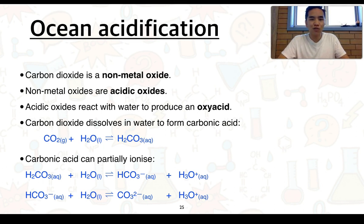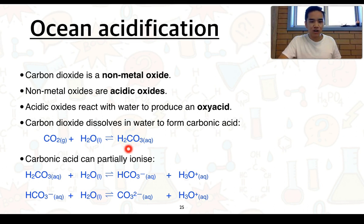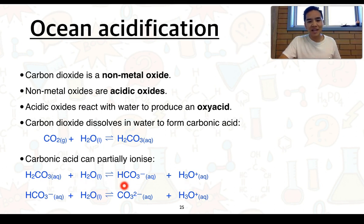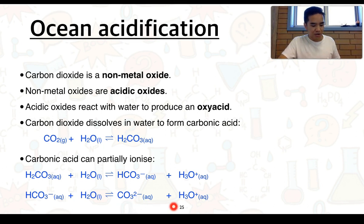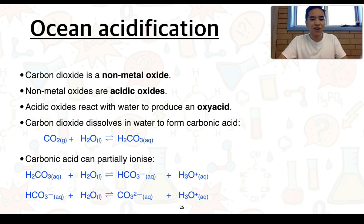From that point, we know acids are proton donors, so in solution these acids can donate protons to water. Being diprotic — or in other words, containing two protons — carbonic acid can do this in two stages. H2CO3 in aqueous solution reacts with water, giving a proton to water to form hydronium ions and HCO3-, which is called the hydrogen carbonate ion. This hydrogen carbonate ion can then further ionise, producing more hydronium and CO3 2-, which is the carbonate ion. So we can see two stages of ionisation.